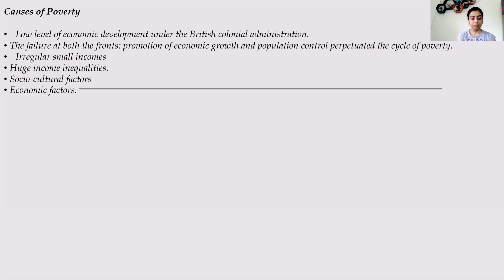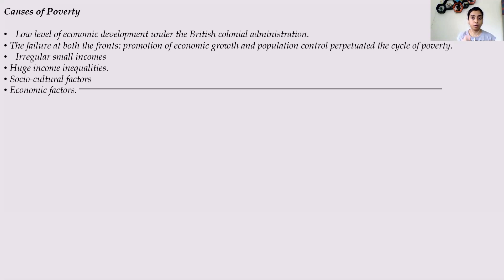The two factors combined to make the growth rate of per capita income very low. When employment opportunities are low and people are not contributing towards the economy, the country's per capita income will also be low. So there was failure on two fronts: first, economic growth was not happening; and secondly, population was increasing at an alarming rate. People were not having jobs on one hand, and on the other hand population was also increasing. If people are not earning properly and the population is increasing, they will not be able to sustain their families — that is one reason that has caused poverty in India.